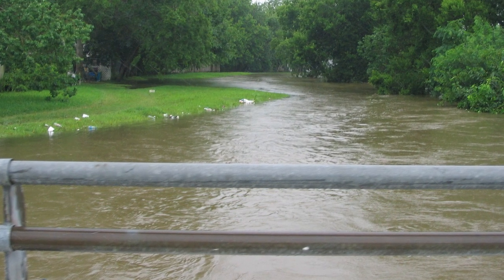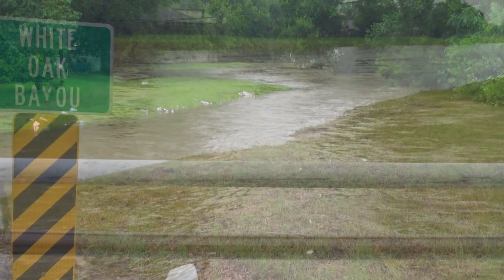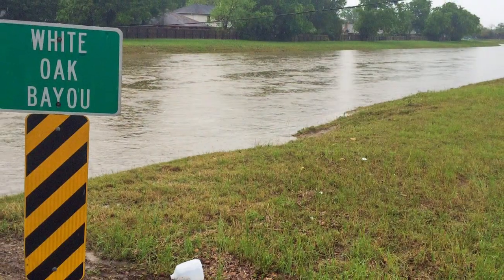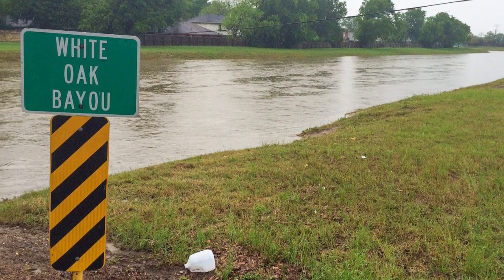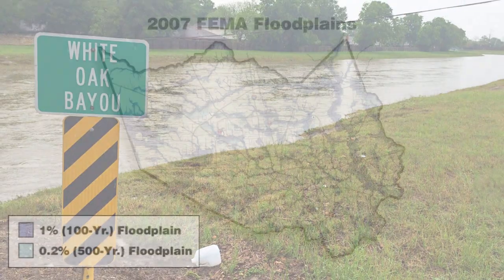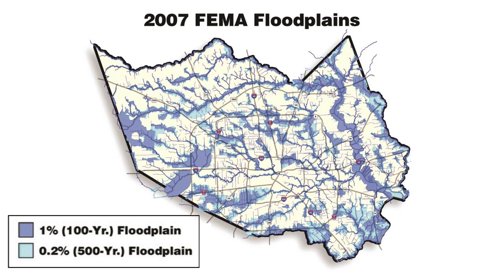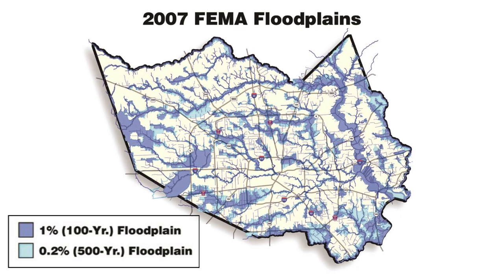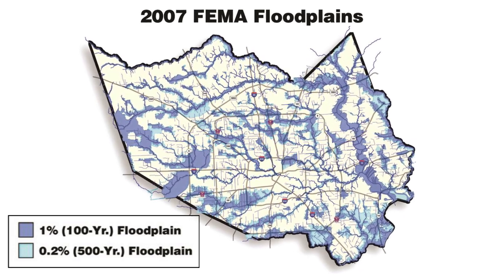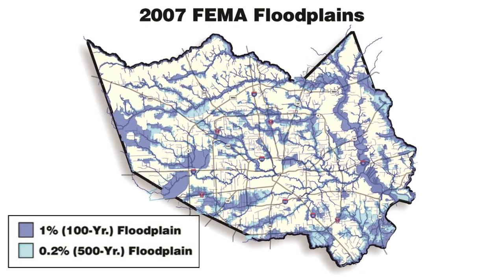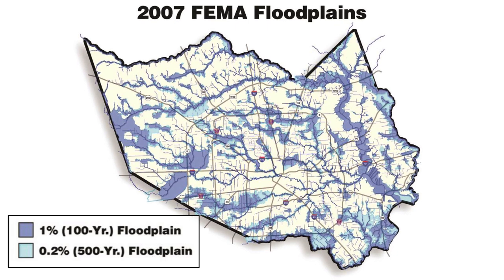Nature can and will provide more rainfall than the area's bayous, creeks, and channels can handle. Every flood is different. Therefore, floodplains are typically expressed by stating their annual exceedance probability, or the chance of a particular storm to occur in any given year.